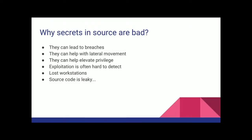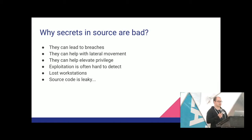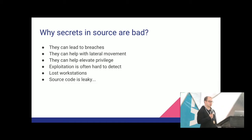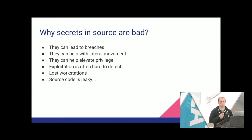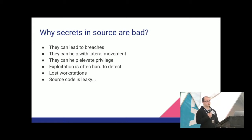That begs the question of why is it bad to have secrets in the source code in the first place. There are a lot of reasons. These secrets can often lead to really bad problems, and you want to be careful about where you lock them up. They can definitely lead to breaches. They can help with lateral movement — if you've infected one host and you find secrets in the source code, you can move laterally to another host. You can elevate privilege, moving up to root or to another system with elevated privileges. Workstations get lost all the time — people's laptops get left on trains.